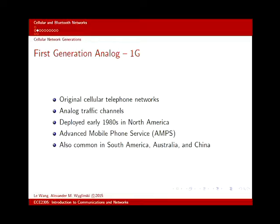First generation — no one should have a 1G phone anymore, it would be the size of a brick. This was the first cellular network, and it used analog techniques. Voice data was analog, modulation was FM, and it was deployed in the 1980s. You might find a 1G phone in your parents' attic — probably pretty big with a large battery.